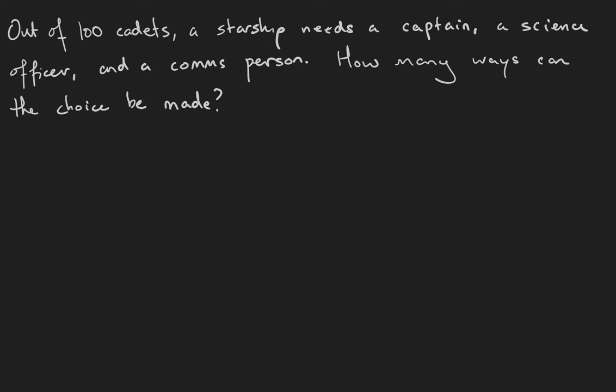Notice that we don't want to do 100 factorial here because we're not trying to arrange all 100 of the cadets. So 100 factorial is wrong. Instead, we only want to arrange three of them.